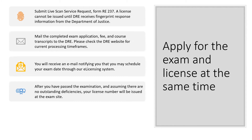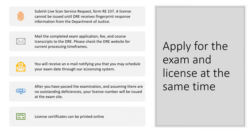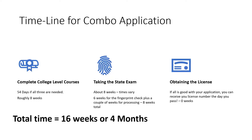If I paid both the $245 for the license and the $60 for the test, done my fingerprints, and everything else the Department of Real Estate asks, and then I pass the exam, they can issue me a license number that day — right then and there, I'm legal. I could go sell a house. You print your certificate online.